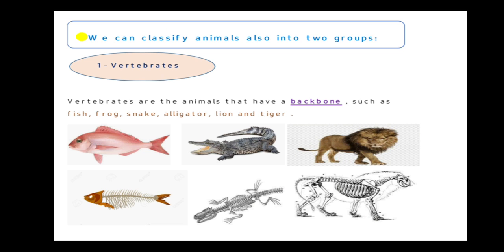We can also classify animals into two groups: vertebrates and invertebrates.